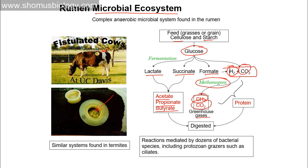These reactions are mediated by dozens of bacterial species, including protozoa such as ciliates. Similar systems are also found in termites, but with different locations. In cows, we can literally drill a hole through the stomach and observe this system, where methanogens utilize H2 and CO2 and produce CH4 and CO2. This helps in the digestion of the cow, allowing maximum utilization of feed so that maximum nutrients are absorbed and maximum output is obtained.